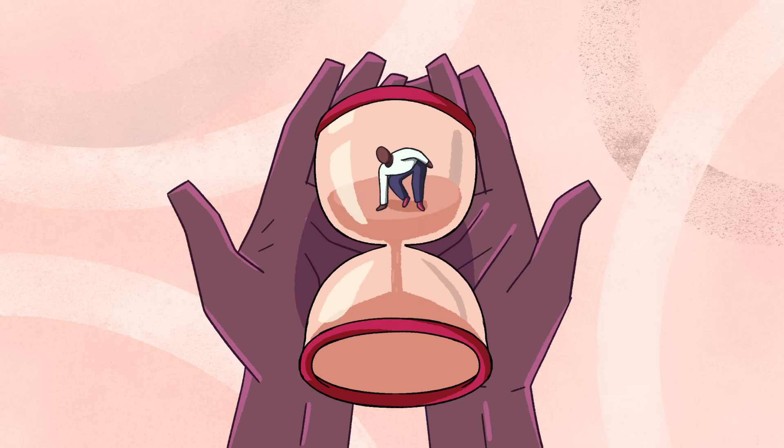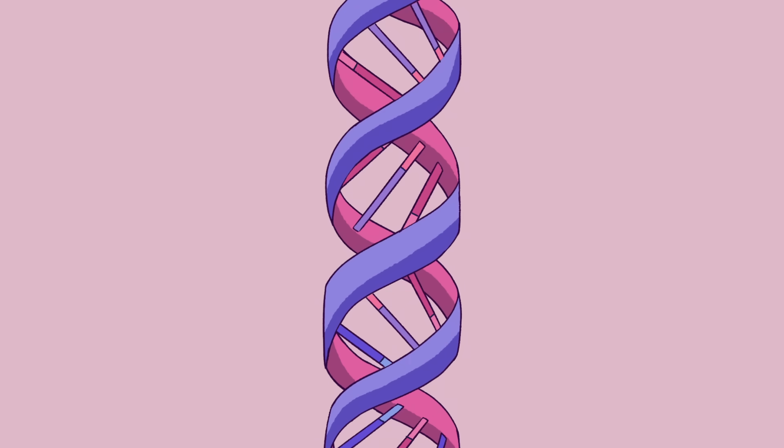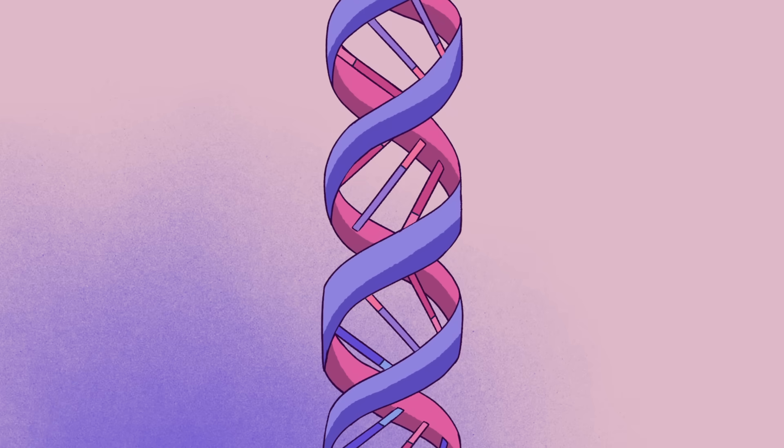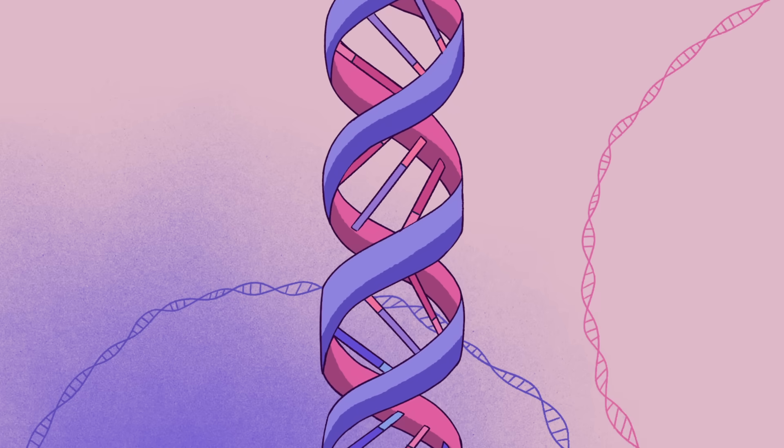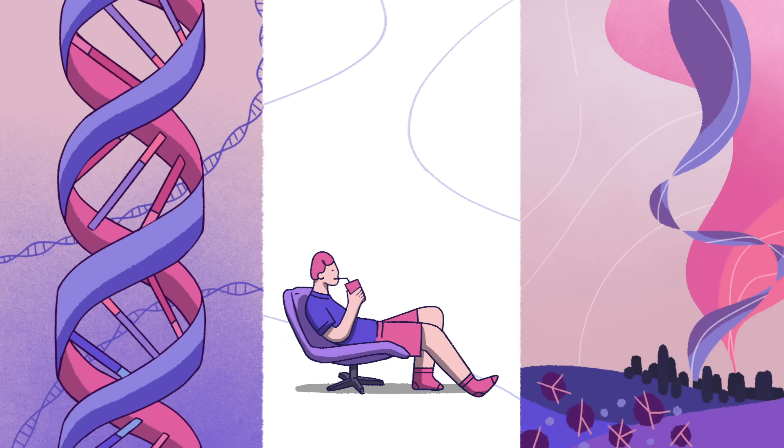Some rare forms of Alzheimer's are caused by a single inherited gene variant, but most of the time, Alzheimer's is due to the complex interaction of multiple genes in combination with lifestyle and environmental factors. So it's impossible to predict who will develop the disease.